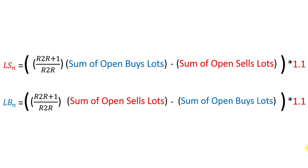So I used this formula to implement my expert advisor and use algorithmic trading to implement the hedging strategy, because the hedging strategy is a little sensitive and it is not efficient to sit in front of your computer and always check whether it is time to open the next order or not. It must be done by algorithmic trading. This formula is the formula that I always use in hedging techniques.